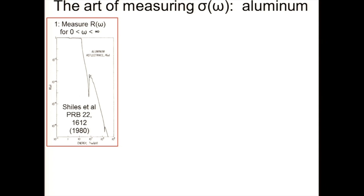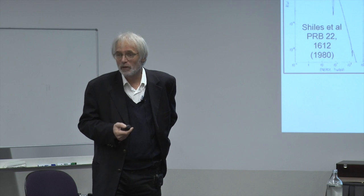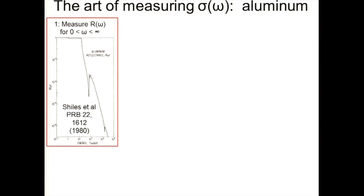A little bit about experimental techniques — this is the only slide where I'll talk about how it's done. The objective of linear spectroscopy in optics is to measure sigma of omega, usually the real and imaginary parts. The usual step is you start by measuring the reflectance as a function of frequency. Here plotted is the reflectance of aluminum from 10^-1 eV up to 10^4 eV. Aluminum is a good reflecting material — it has nearly 100% reflection up to about 10 eV, then it starts dropping. This is your reflectance pattern, and you try to measure it from zero to infinity.